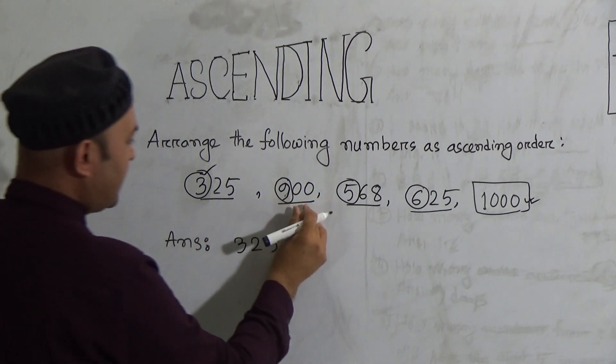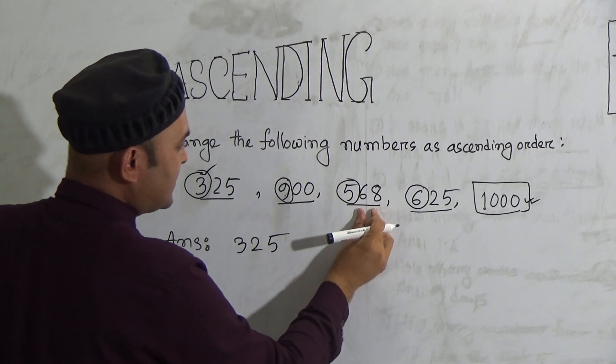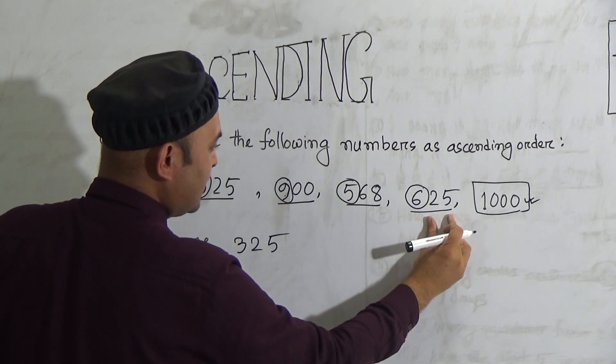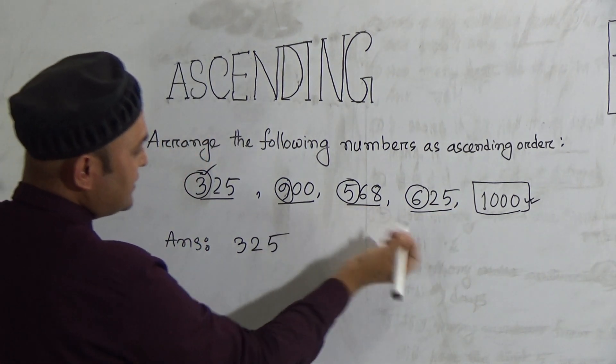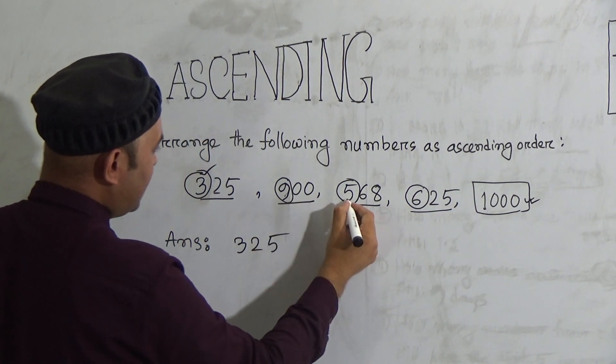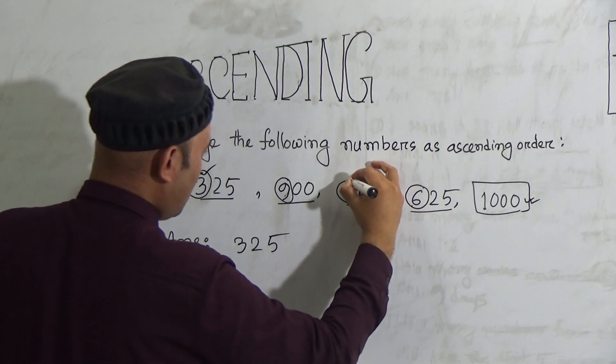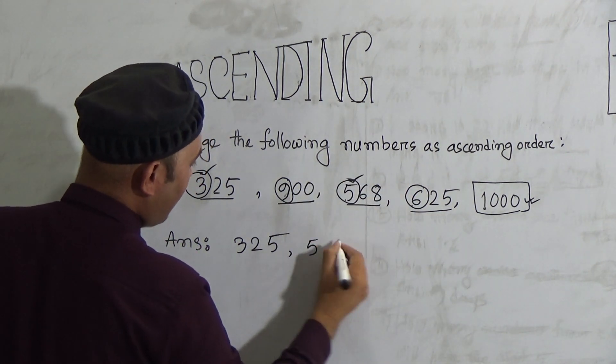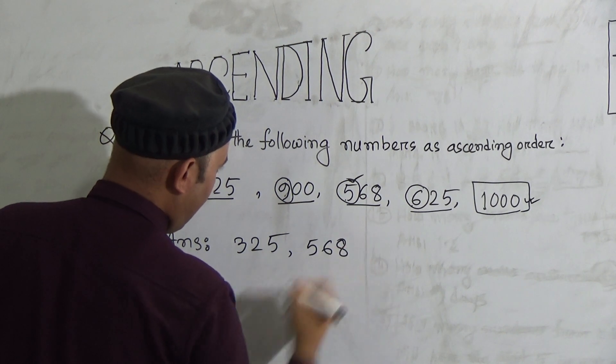So the remaining are 900, 568, and 625. Which one is smallest among them? 9, 5, and 6. It will be 5. So the next one will be 568.